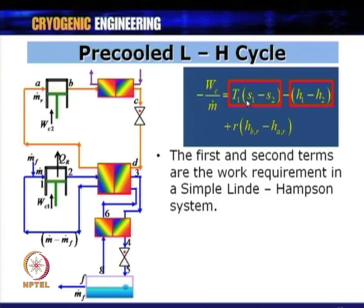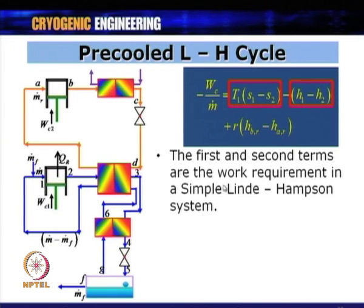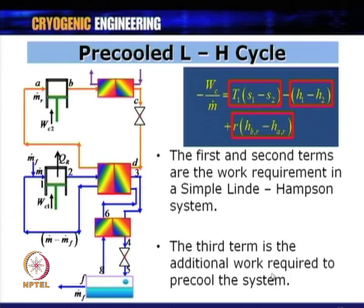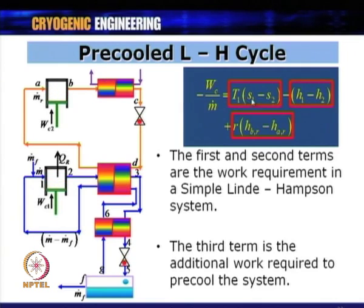The total work done on this pre-cooled Linde-Hampson cycle has contributions from the primary cycle (first two terms, same as simple Linde-Hampson) plus the additional work from the pre-cooling circuit (third term). This additional work must be weighed against the benefit of higher liquid yield.